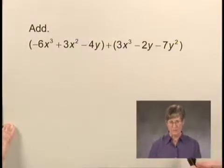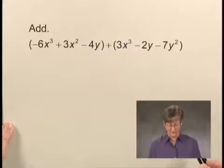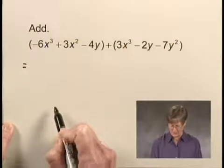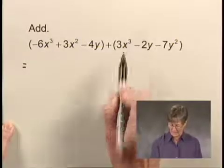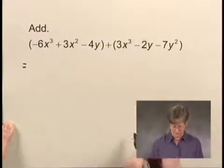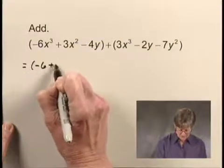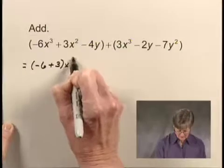Now, when we add these two expressions, what we're really doing is collecting like terms. So let's try to identify like terms. I have an x cubed term here, and I have an x cubed term here, and those are the only x cubed terms. So I can write those as negative 6 plus 3x cubed.